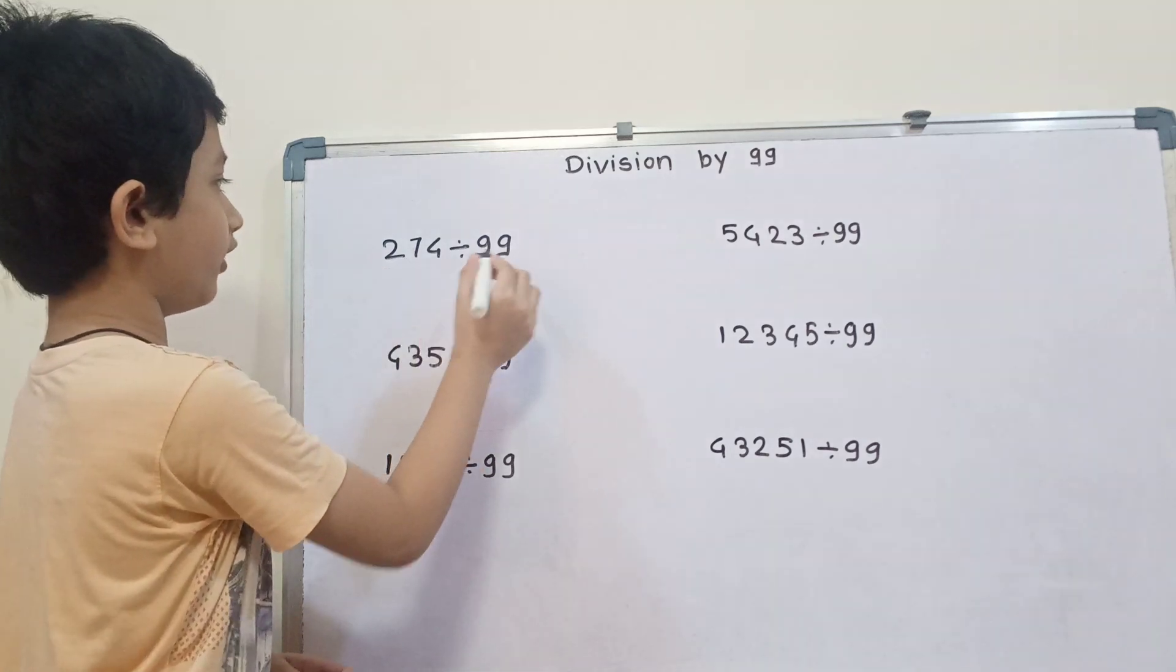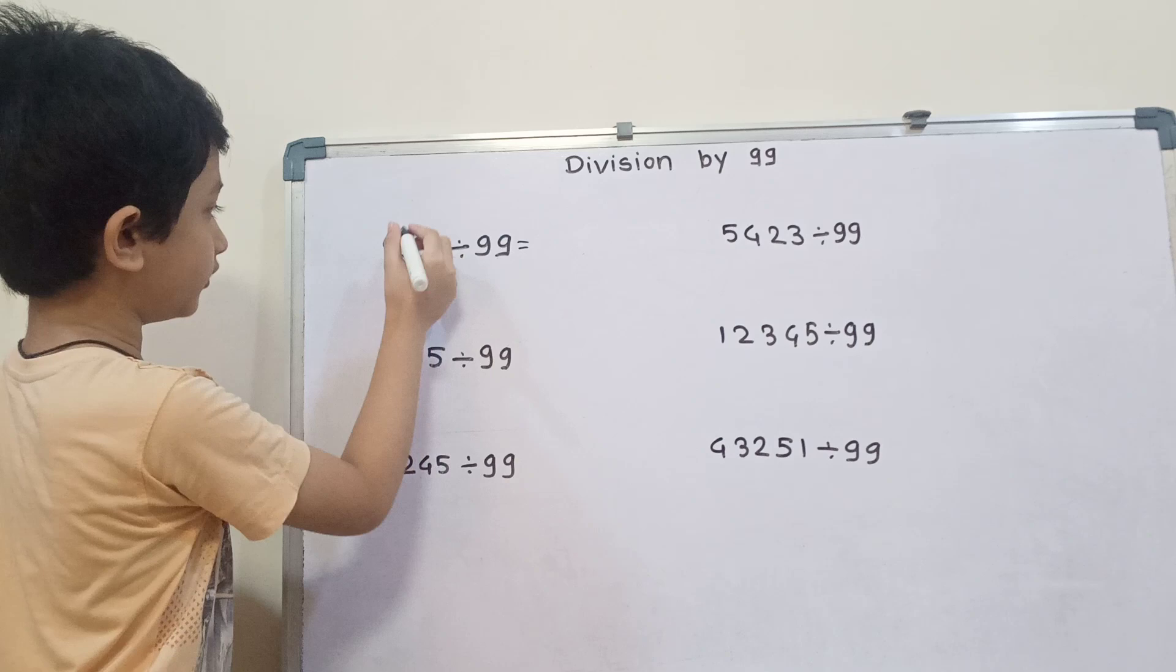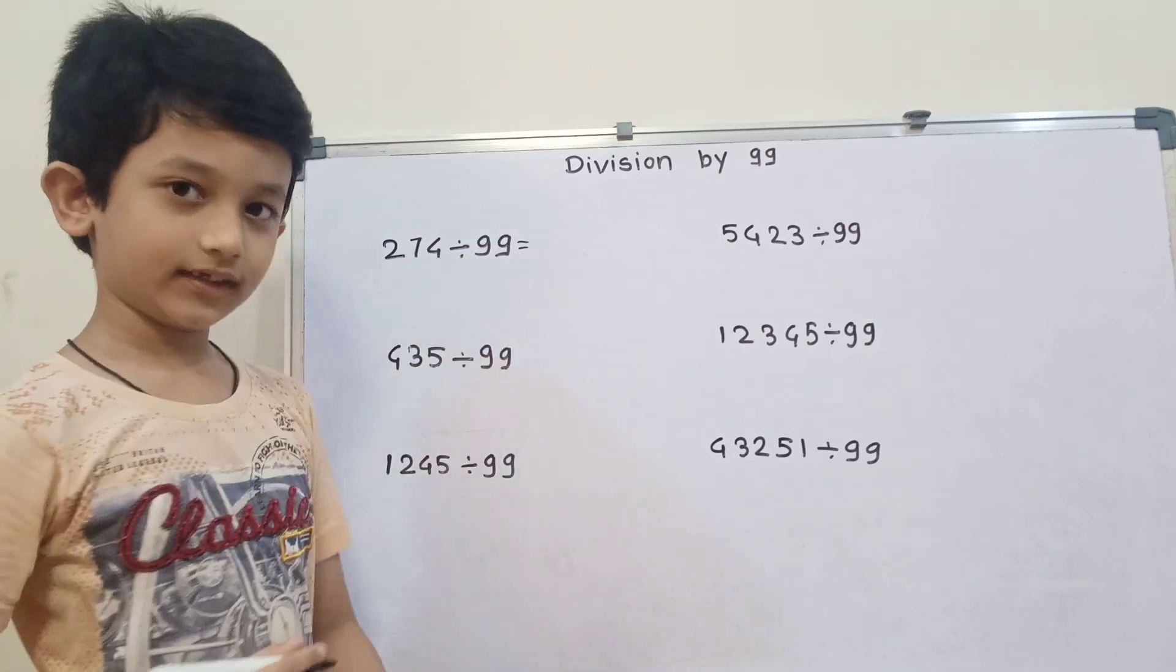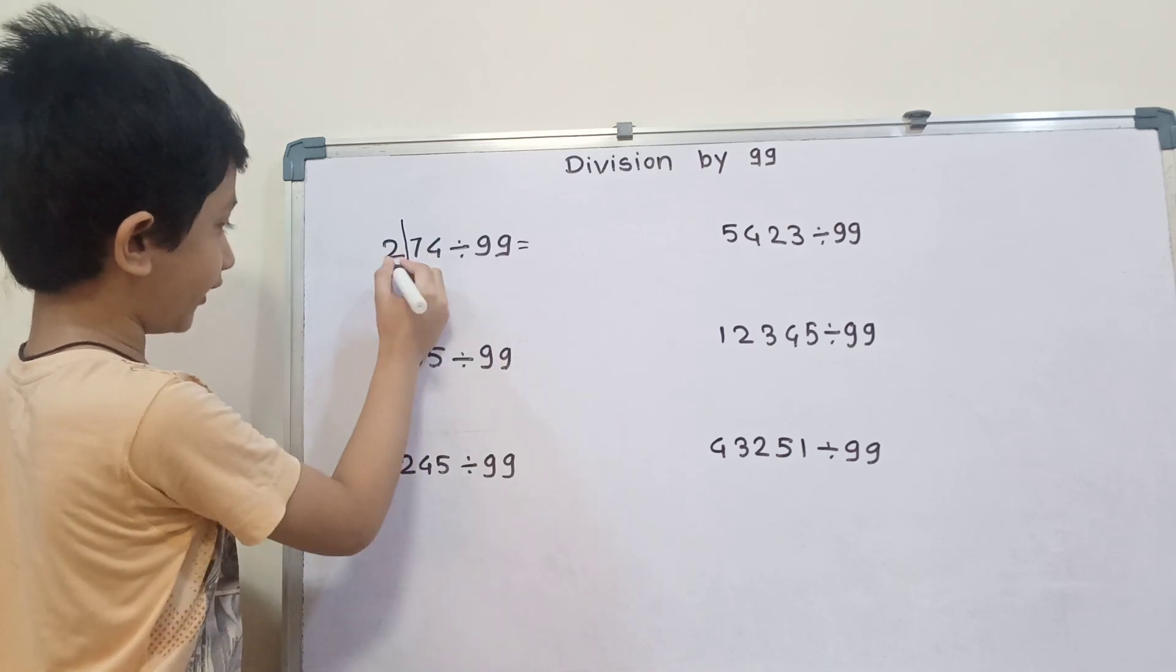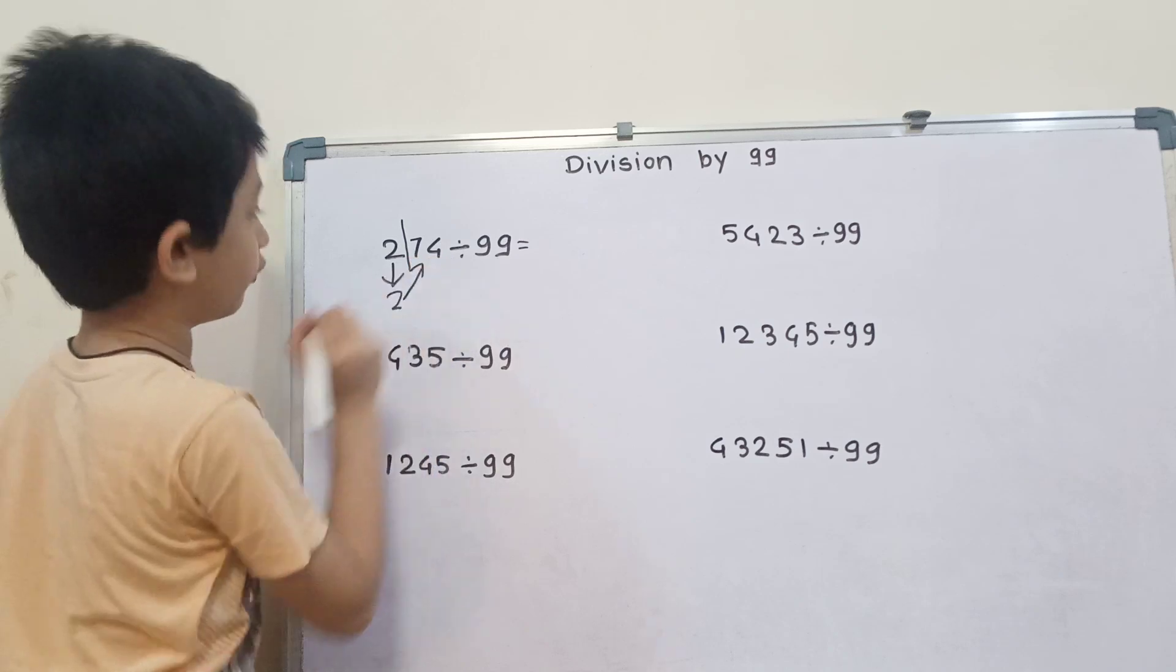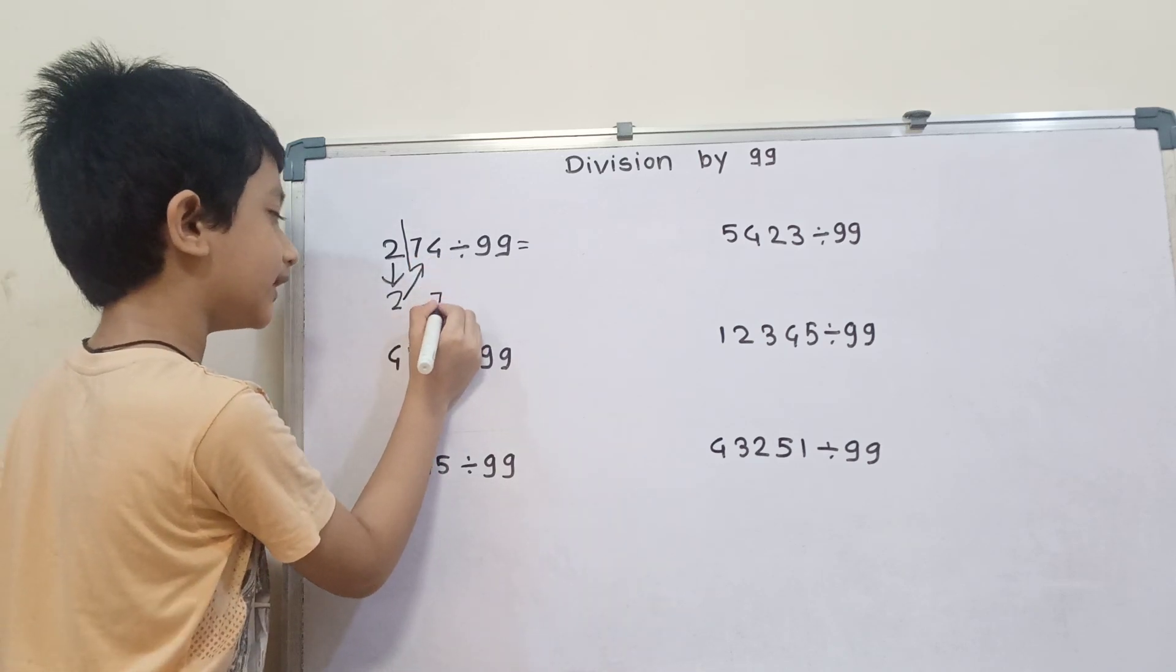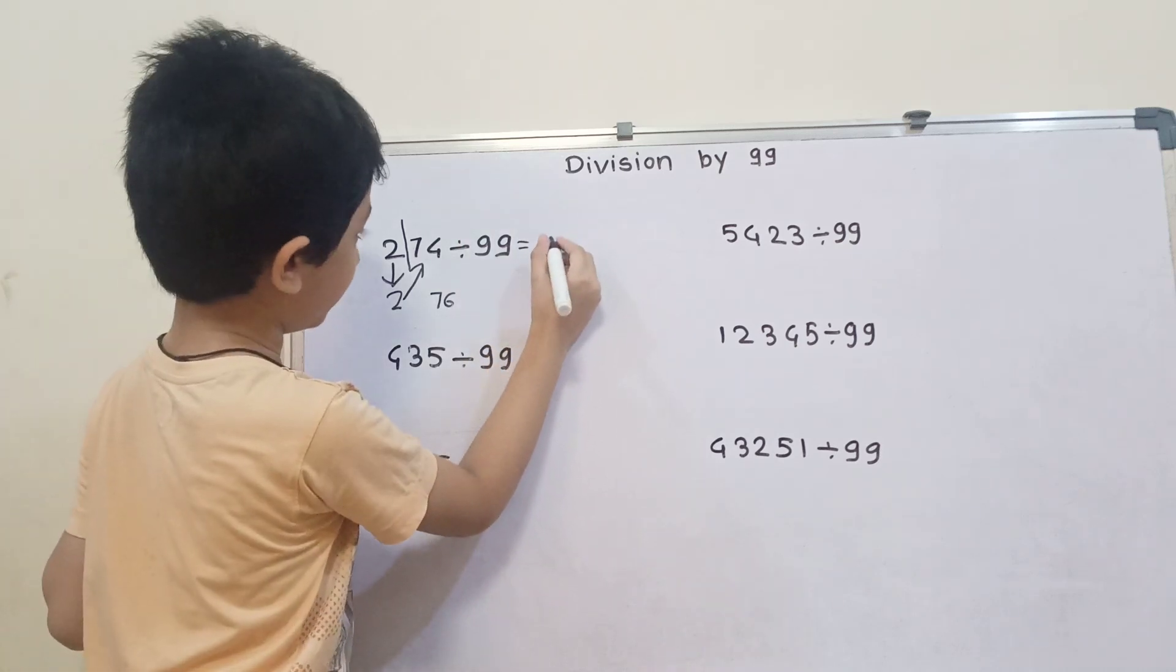First, 274 divided by 99. We are going to divide by 2 digits. So first, write 2 as it is. Then 74 plus 2 equals 76. So the answer is 2.76.